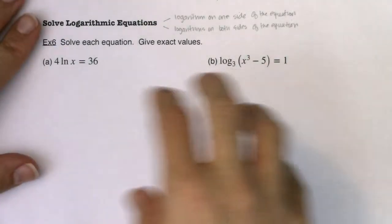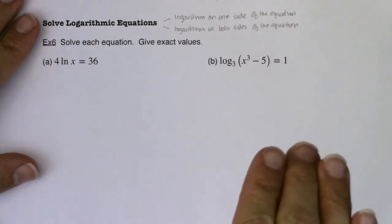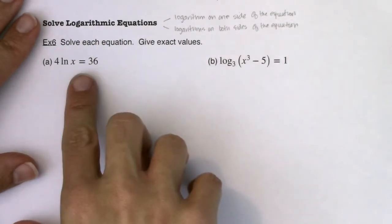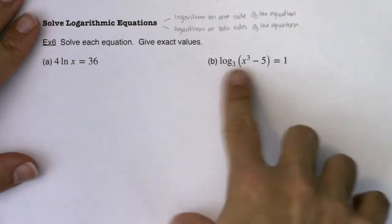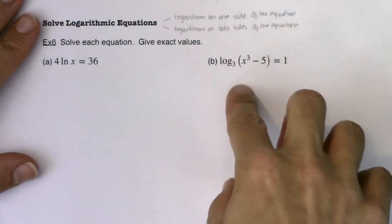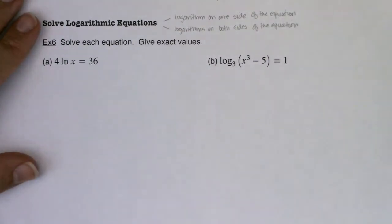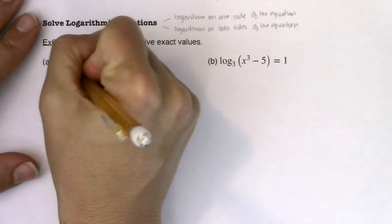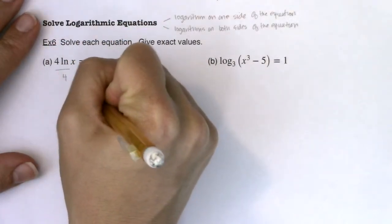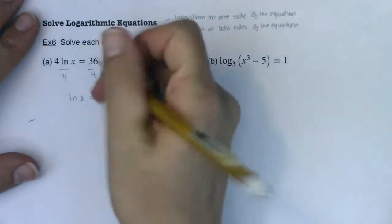The first thing we have to do is isolate the logarithmic expression, in the same way that we would have isolated the exponential expression when solving exponential equations. The equation in 6b is already isolated — there's nothing else except the logarithmic term on the left side. But in 6a, there's a 4 being multiplied, so I need to divide by 4 first and get ln of x equaling 9.